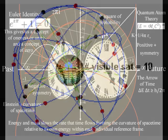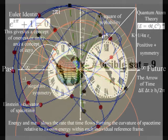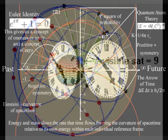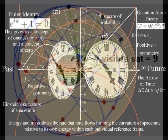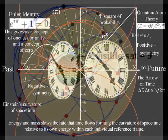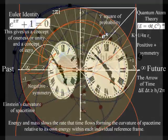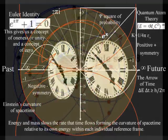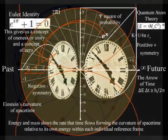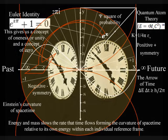But it is not that simple. In order for communication to work, the global positioning system has to allow for the effect of relativity. Special relativity tells us that moving clocks run slow and general relativity tells us that clocks run faster, higher in the gravitational field. These effects don't just cancel out. General relativity wins out and time does indeed run faster, up in orbit with the satellites.